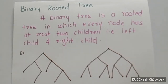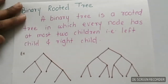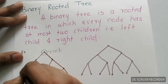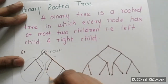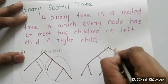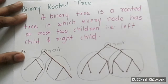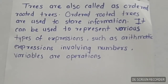Binary rooted tree. A binary tree is a rooted tree in which every node has at most two children, that is a left child and a right child. These are some examples of a binary tree. Here, this is the root, this is the left child, and this is the right child. Trees are also called ordered rooted trees. Ordered rooted trees are used to store information and can represent various types of expressions such as arithmetic expressions involving numbers, variables, and operations.